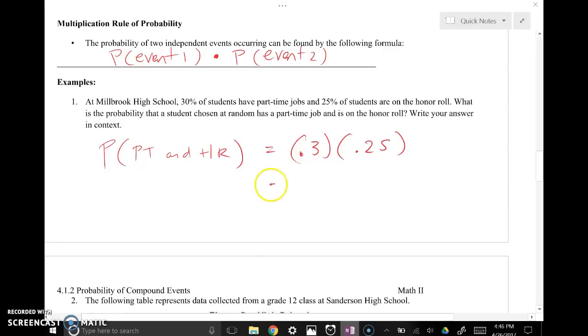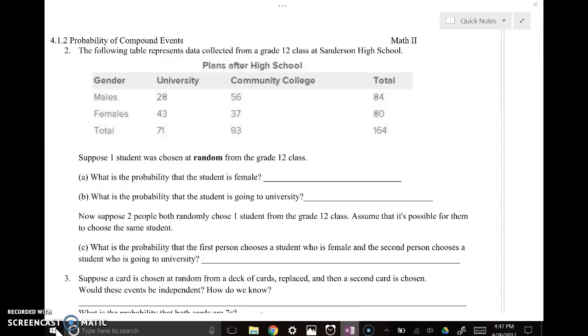So 0.3 times 0.25 would be 0.075 or if you're rounding to nearest tenth, 0.8, sorry, 0.08 or 8% if you convert to a percentage. Yeah, they're using this chart here for plans after high school and it looks like they interviewed 164 total people from Sanderson High School about this.